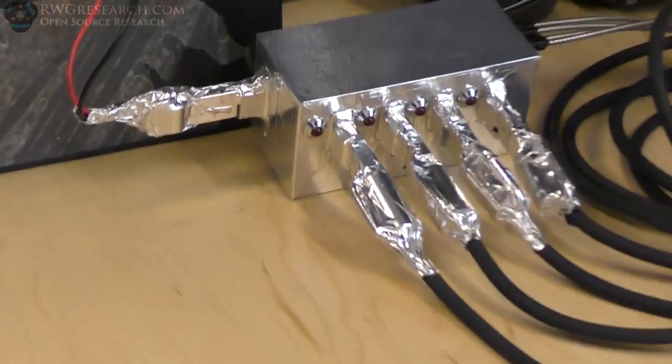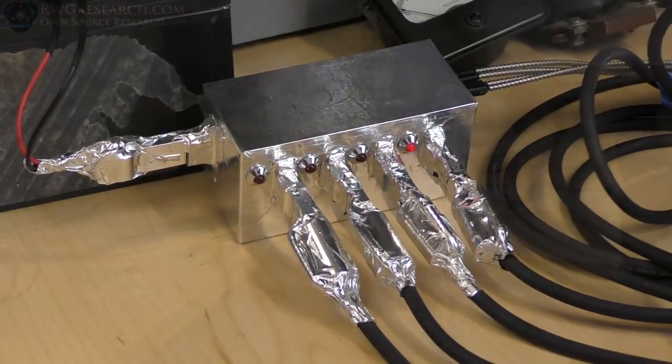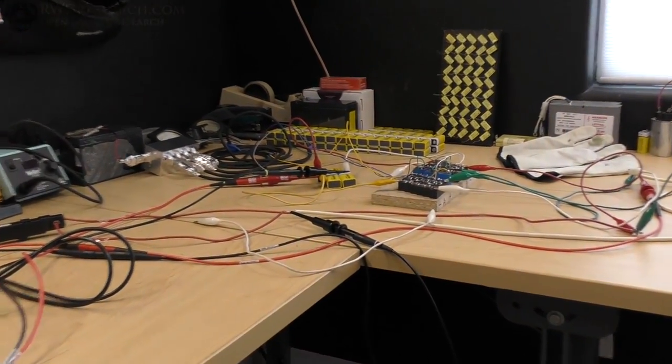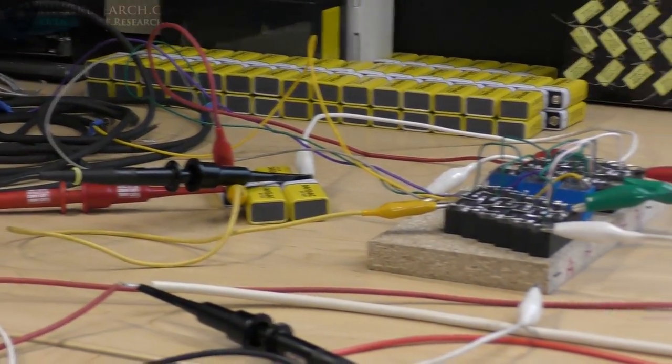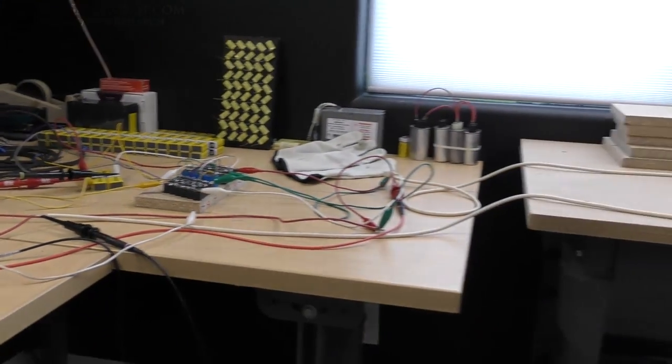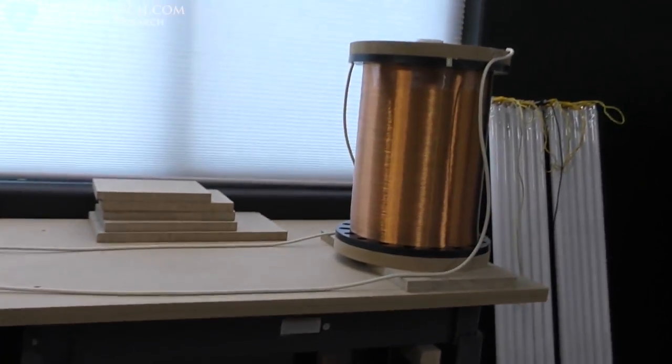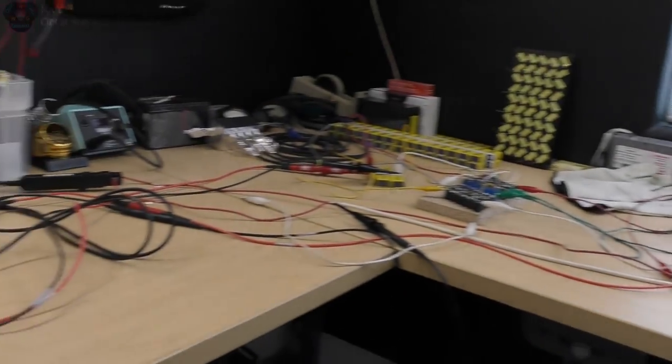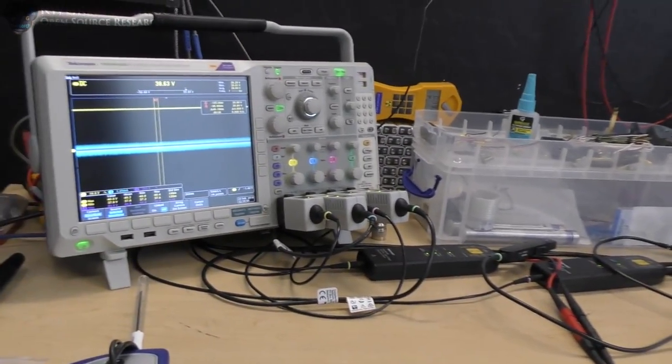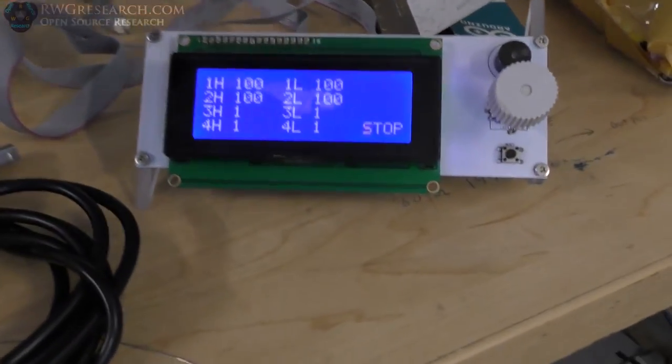Alright, we're connected to 12 volts, connected to our relay bank, connected to our coil with some new high voltage wire, and we're connected over here to the scope. We're set at 100, so I'm gonna start it.